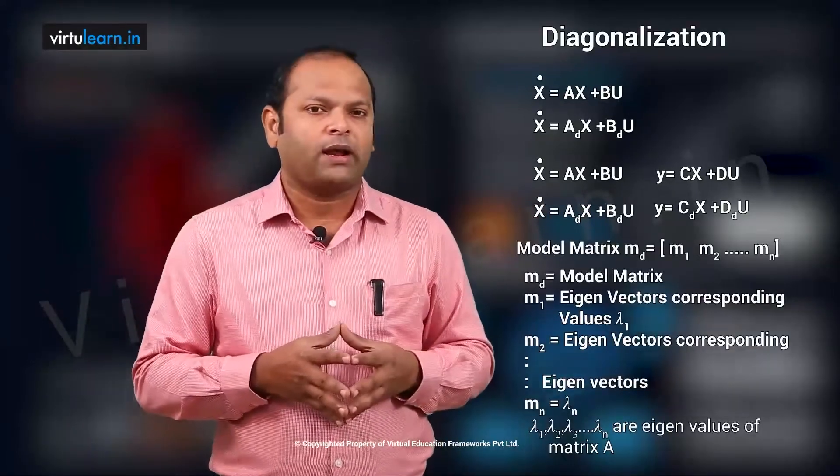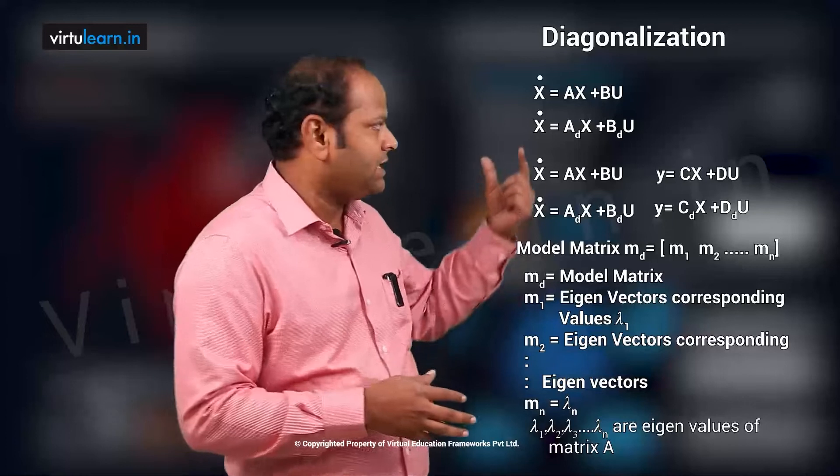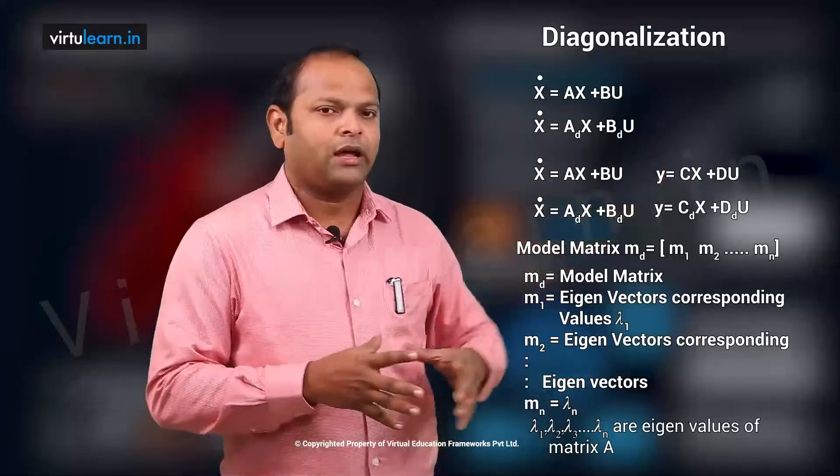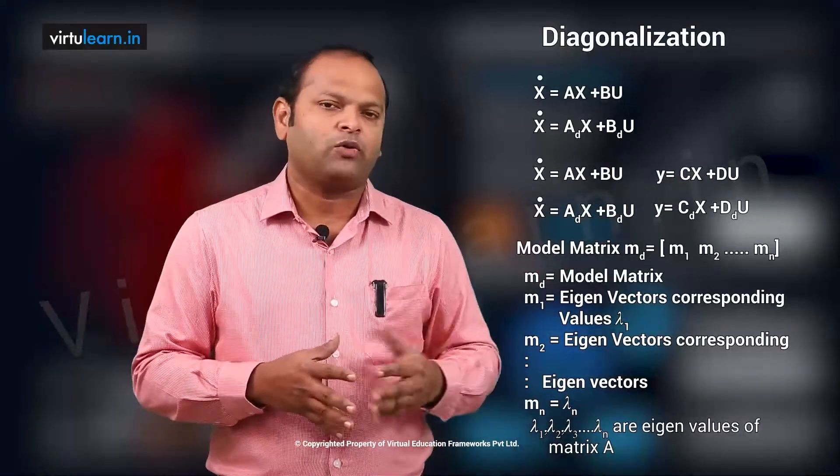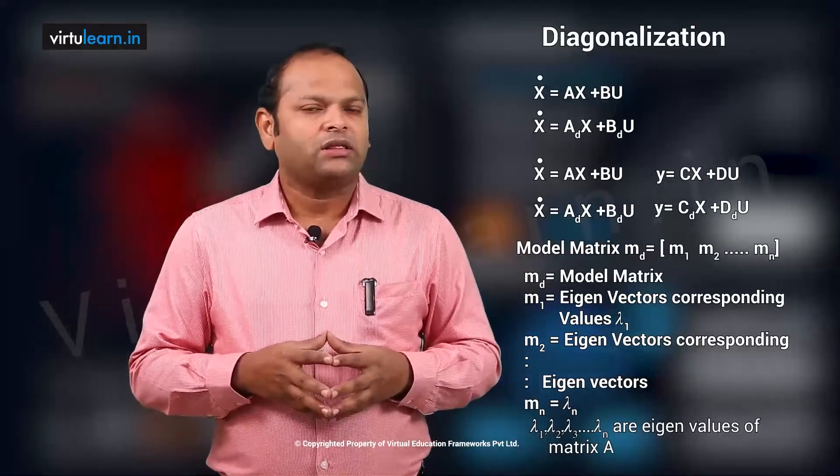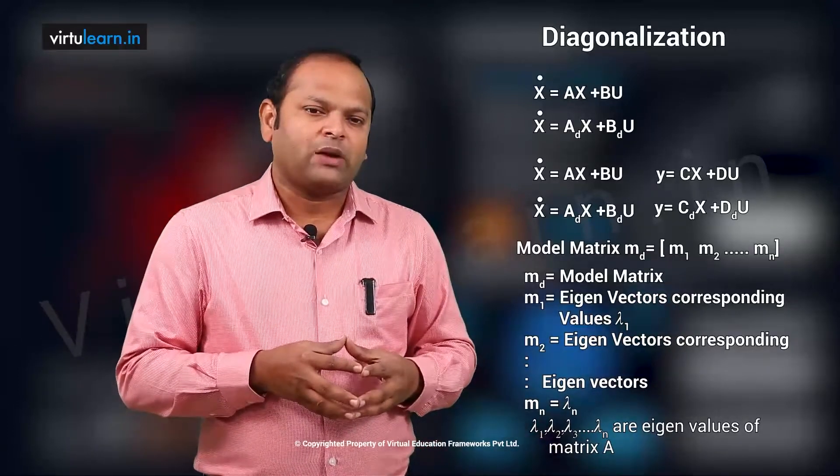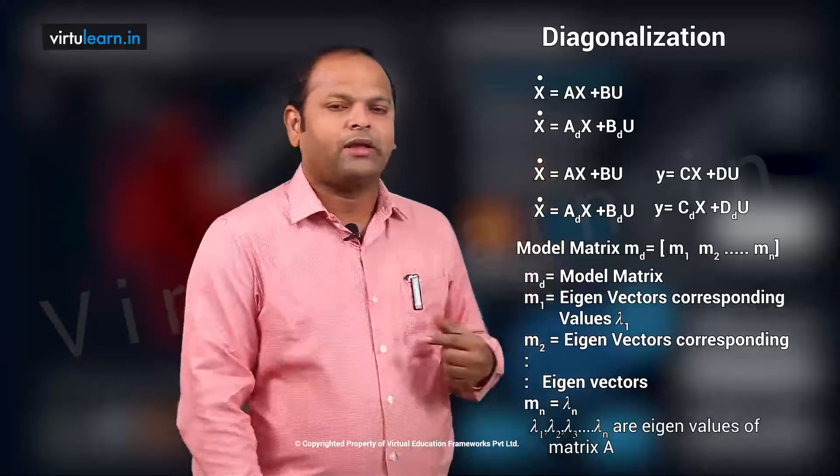So what do you mean by model matrix? Model matrix can be represented as m_d is equal to m1, m2 up to mn. What is this m1, m2, mn? So these are nothing but eigenvectors of corresponding eigenvalues lambda 1, lambda 2, lambda up to lambda n.